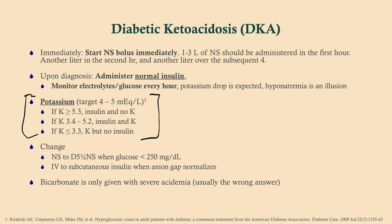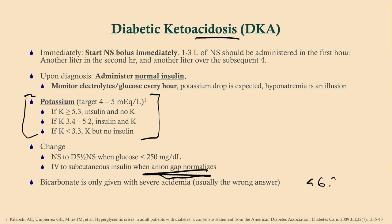Once their glucose is under 250, switch them to D5 half normal saline. Once their anion gap normalizes, switch from IV insulin to subcutaneous insulin. Importantly, when monitoring response to therapy, we monitor the anion gap — not glucose. With DKA it's the acidosis we're treating, just like it's in the name. Bicarb is only given with severe acidemia, pH less than 6.9, so we rarely give it and you can expect it to be the wrong answer on the exam.